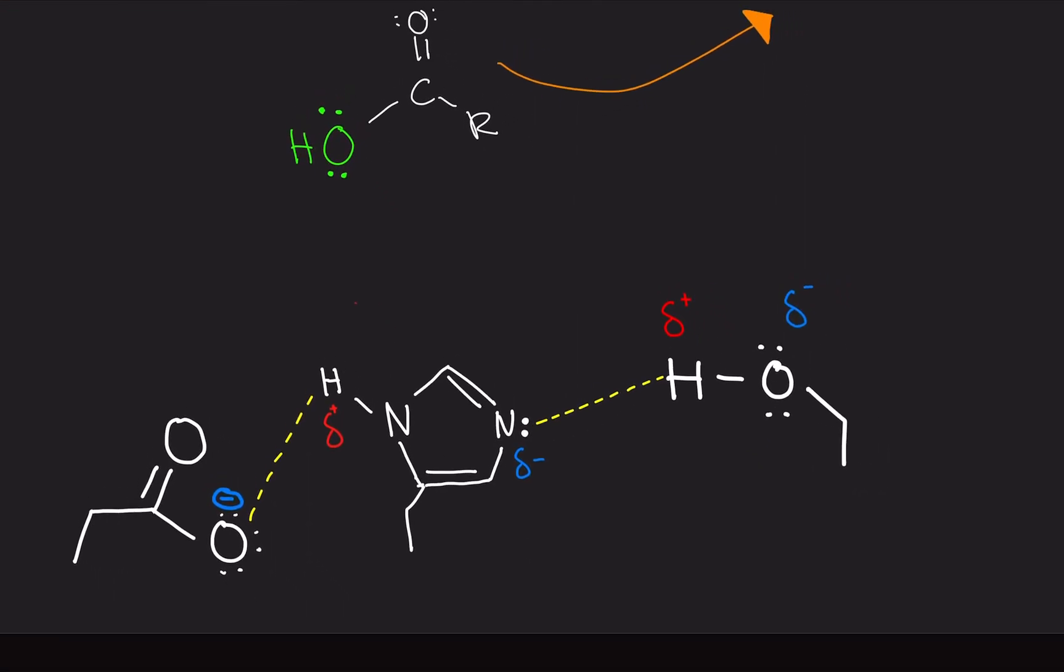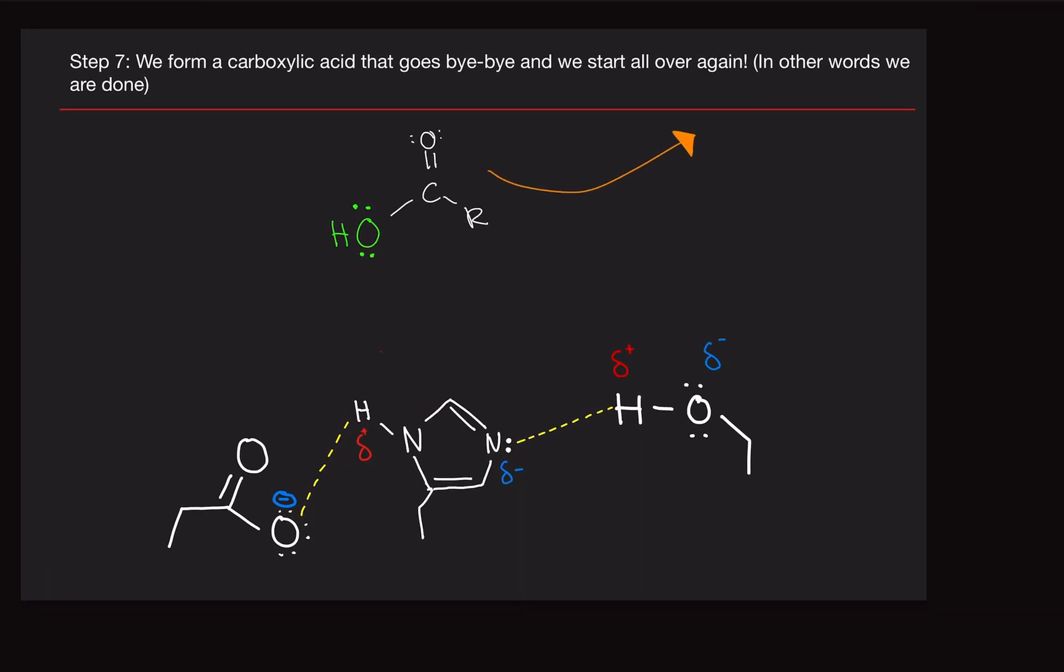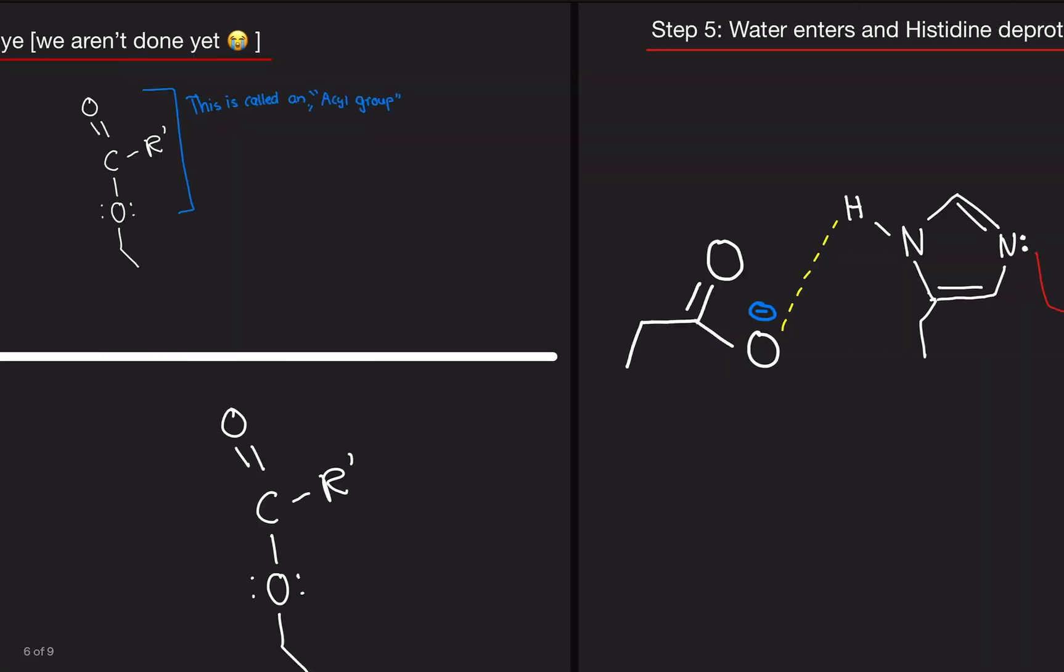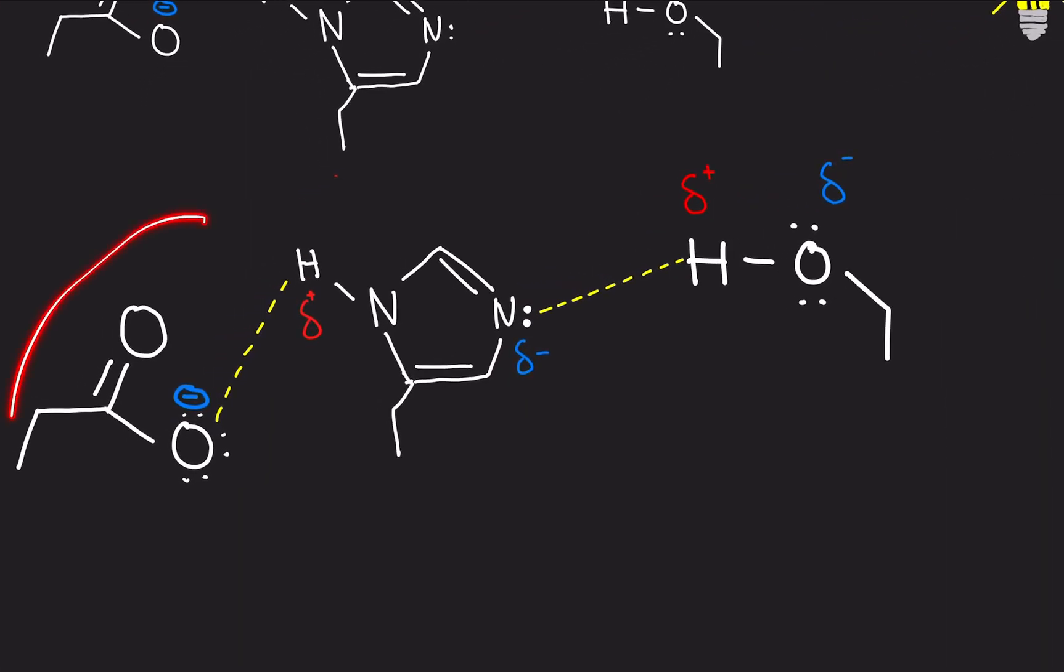And notice we're back to the starting position. We got our aspartate, we got our histidine, and we got a serine. And that's the end of the reaction. So notice that it looks all same as step, right here, step one, same thing. It's the same molecule.